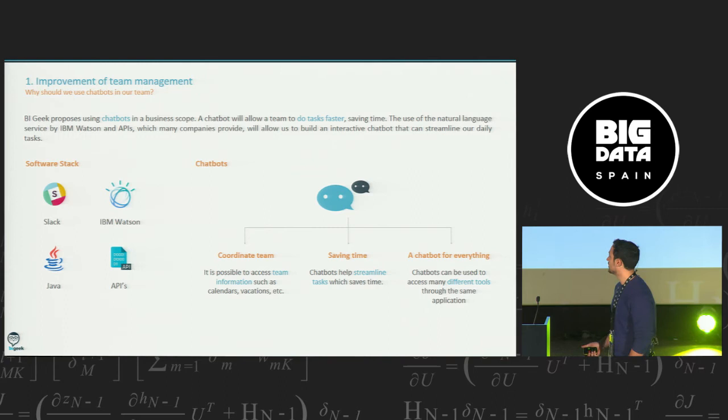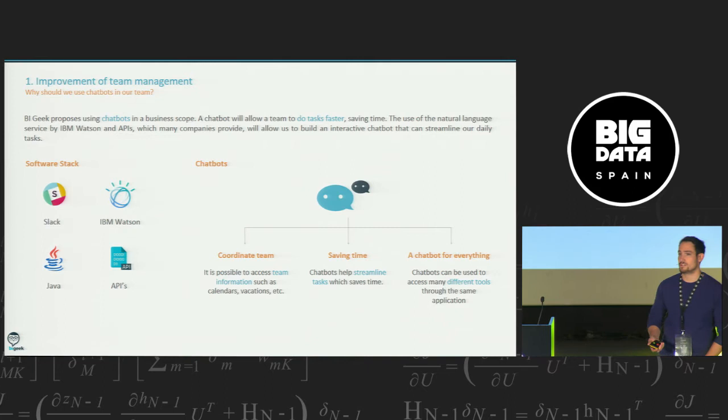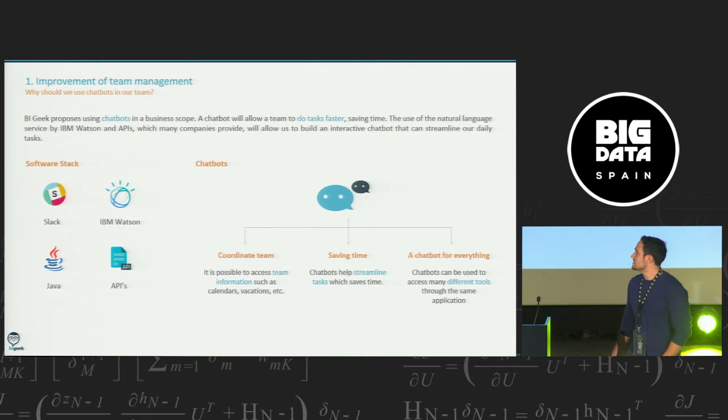We wanted to do it, but using natural language, because the best way to use a chatbot is using the way we usually talk, natural language, instead of learning commands, instead of learning some specific words for using. To do it, we use Slack. Slack is another software tool that we have in our company for the communication between all the team. Slack provides one tool that allows us to create a custom chatbot, but this chatbot can't understand natural language. So, for this aim, we use IBM Watson, as Victor said before.